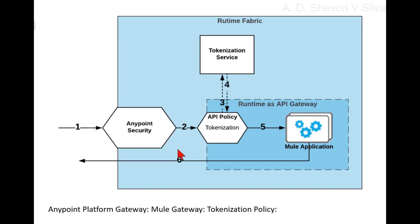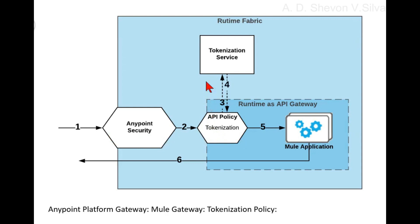The following events occur when a new tokenized request is made. One, the user performs a request to the application protected by the policy. Two, the request goes first to the Anypoint security, then to the application tokenization policy. Three, the tokenization policy extracts all the tokens that match the selected expression.